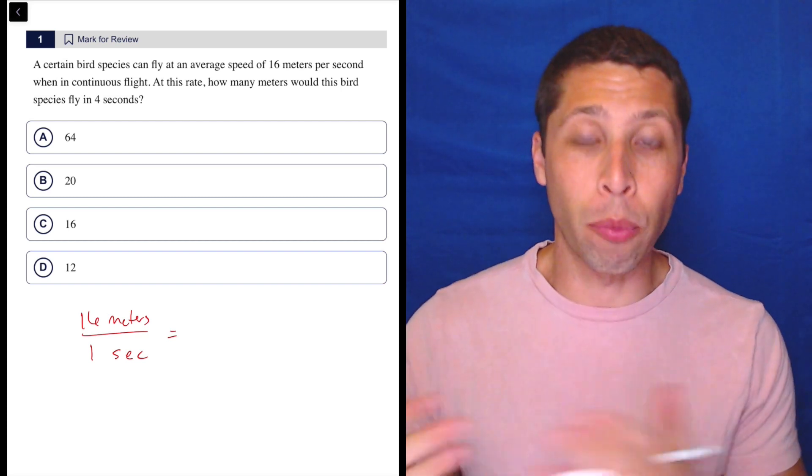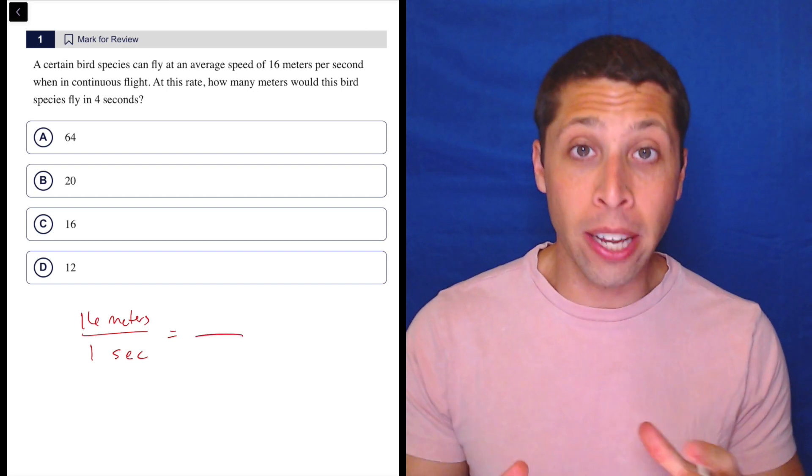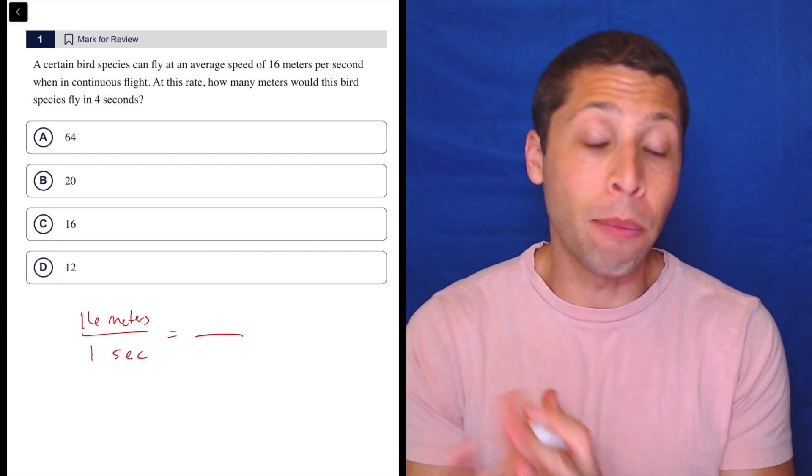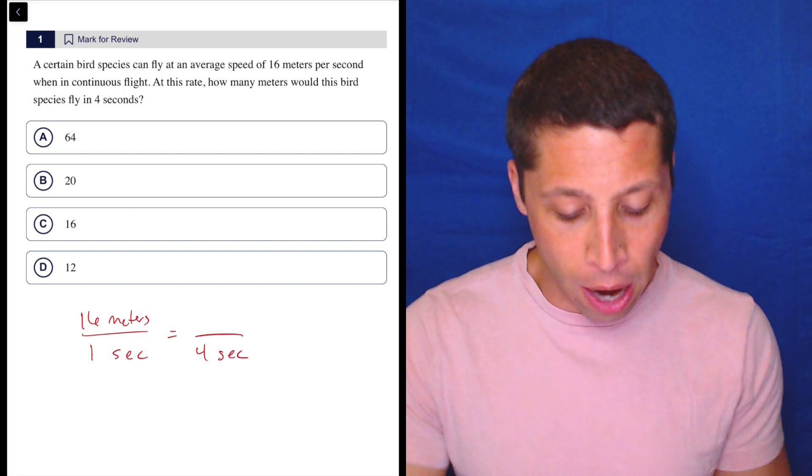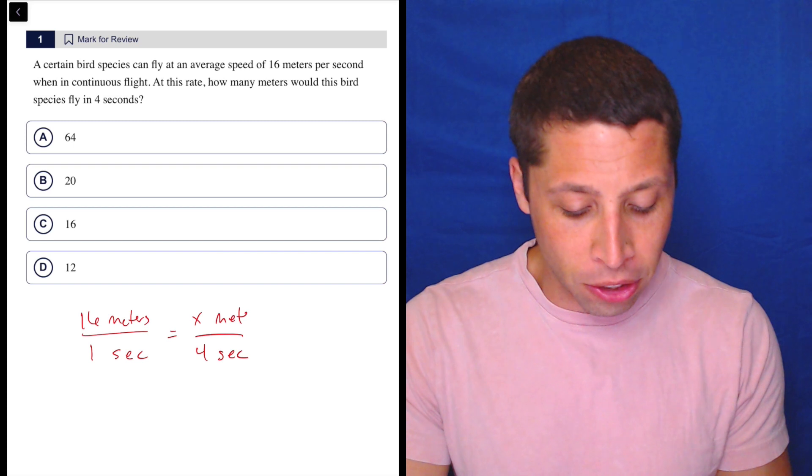This is why it's better to think of a rate of speed as two things, because sometimes we need to compare it to a situation where we increase the number of seconds. Now we have two units. Four seconds is our new time, and we're looking for how many meters that would be.